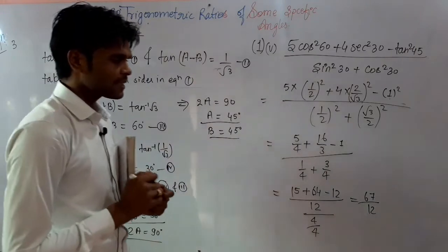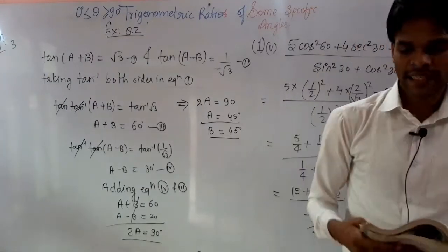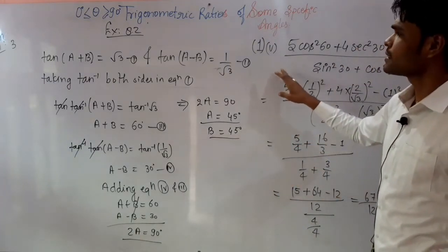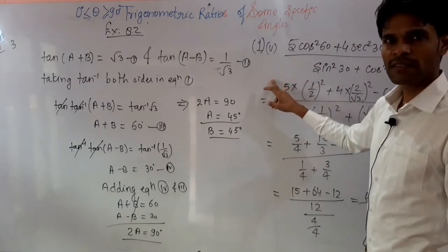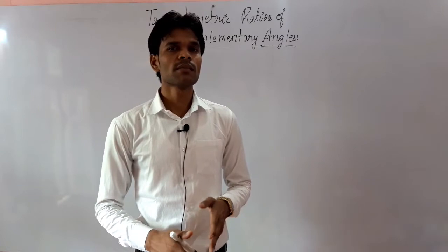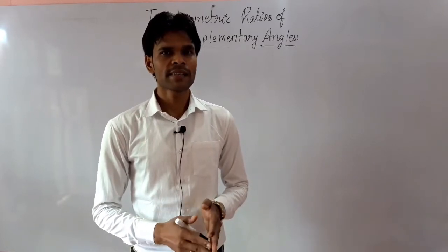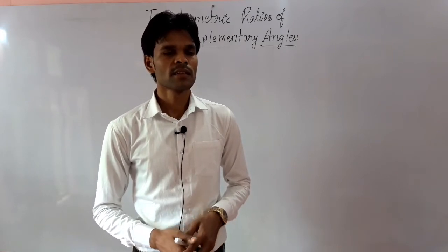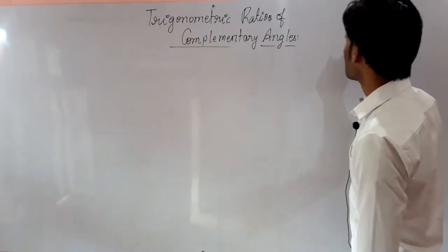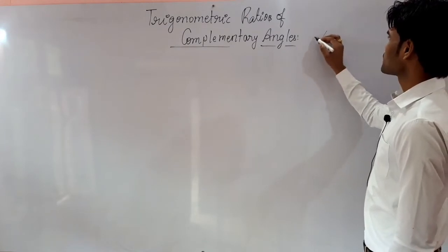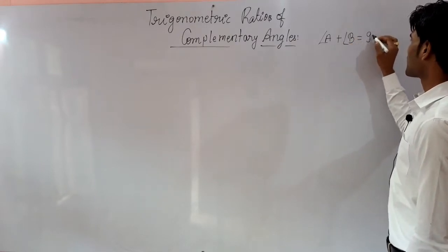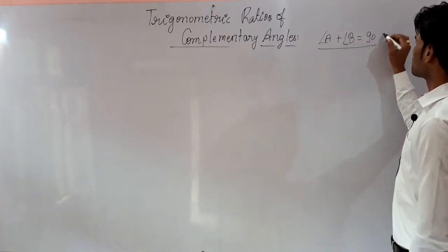Now moving toward the next topic: trigonometric ratios of complementary angles. Complementary angles are two angles whose sum is 90°. If there are two angles A and B such that angle A plus angle B equals 90°, then these are said to be complementary angles.